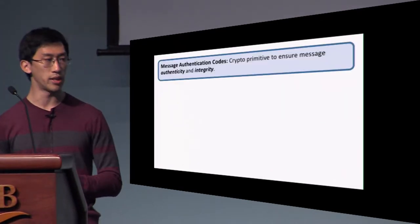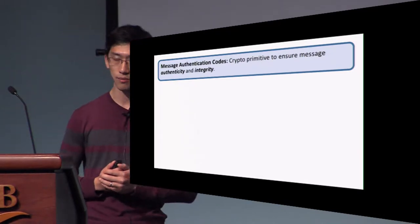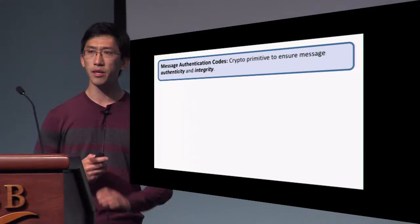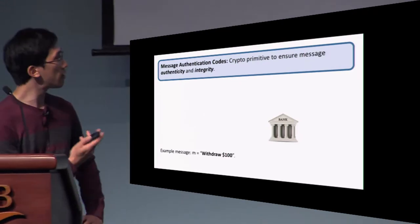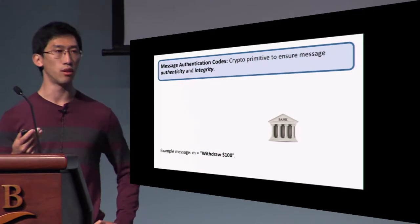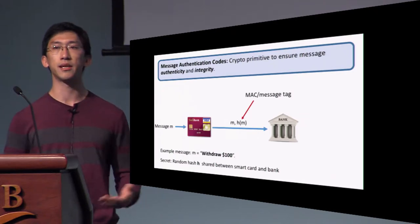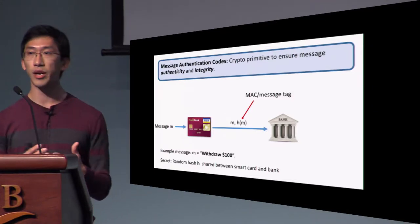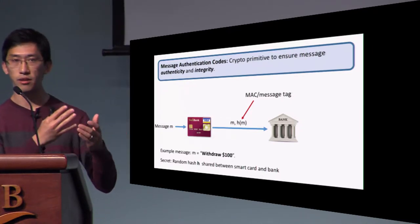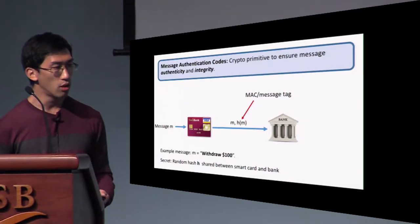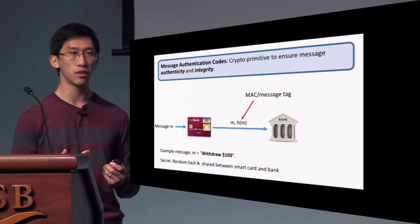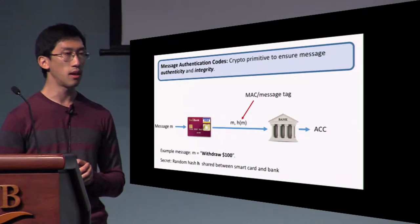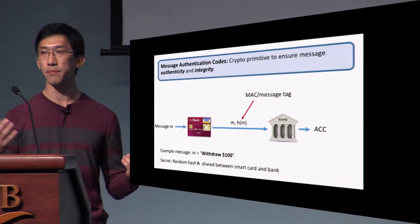Authenticating classical messages: let me focus on message authentication codes, or MACs. These are a basic crypto primitive that ensure message authenticity and integrity. For example, suppose there's a bank and you want to transmit the message M—'withdraw $100 from my bank account.' You use your bank card, which shares a random key H (a random hash function) with the bank. Your bank card appends H(M) to the message, and the bank checks that the tag H(M) is indeed the hash of the message it received, then accepts and withdraws $100.